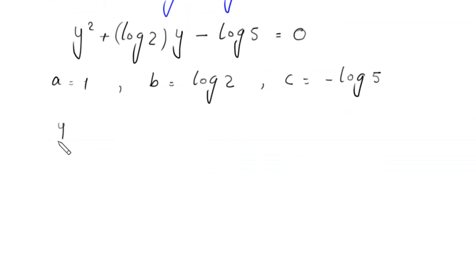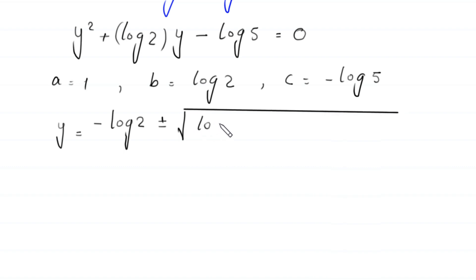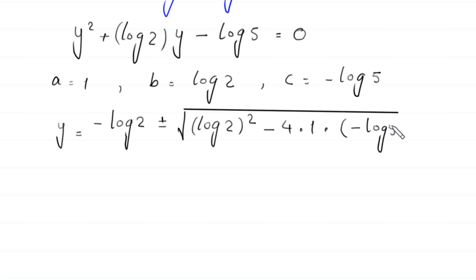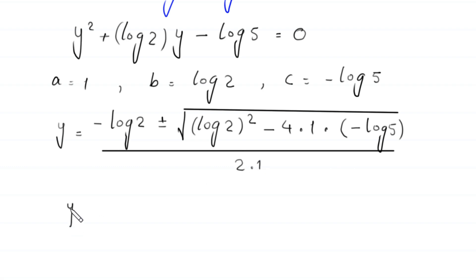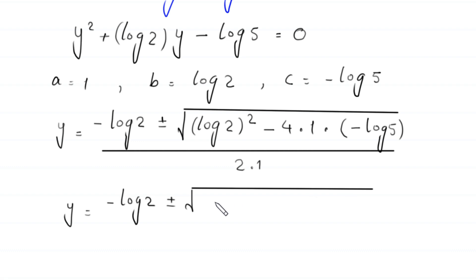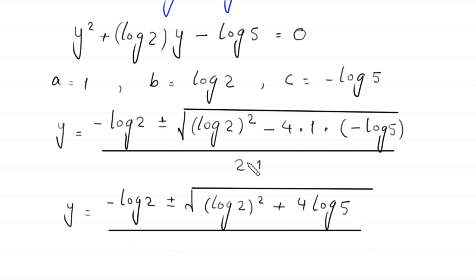According to the quadratic formula, y is equal to negative log of 2, plus or minus the square root of log of 2 whole squared minus 4 times 1 times negative log of 5, divided by 2 times 1. Simplifying: y equals negative log 2 plus or minus square root of log 2 squared plus 4 log 5, divided by 2.